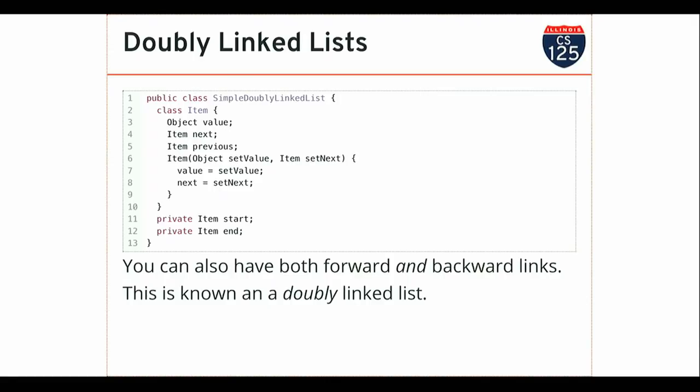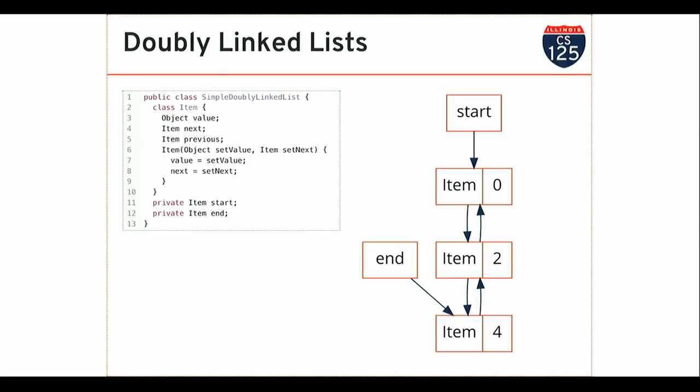Here's an example of a doubly linked list class. I'm storing both the start and the end. I can start at the end and walk this way, or start at the start and walk the other way. There are certain cases in which this is something you might want to consider using.